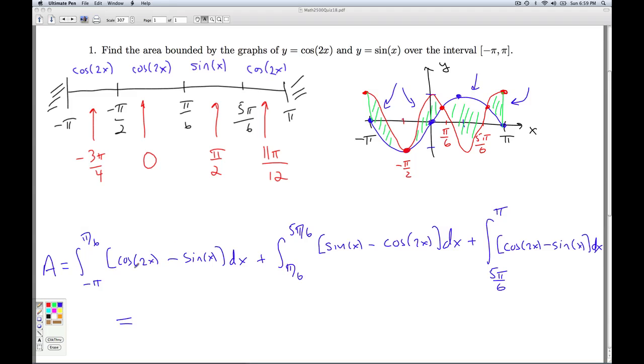And you go through and take your antiderivative. You're going to get a 1 half sine 2x, plus cosine x. Plug in the limits of integration, and do the whole fundamental theorem of calculus gig. You're going to get, for a grand total answer, 3 square root 3, and then whatever the units are, squared. So that'll do it for quiz 18.